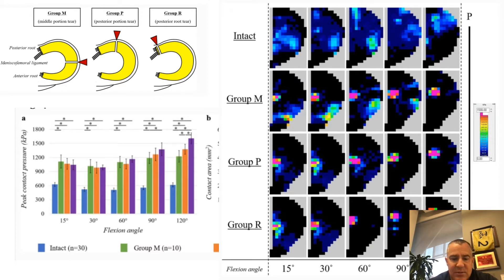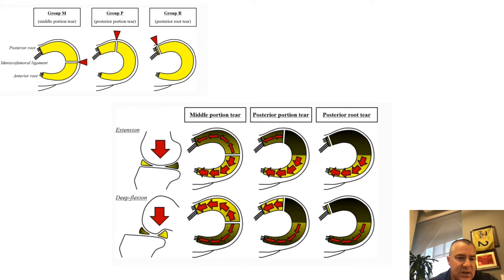The explanation for this is that as you go into deep flexion with mid-portion tears, you can still transmit some force posteriorly. As you get more posterior, there's less force. With a posterior root tear, you have essentially no force transmission through that area, so overall peak contact force areas are greatest in deep flexion — giving the highest biomechanical consequences.